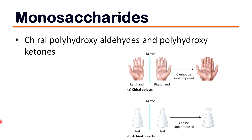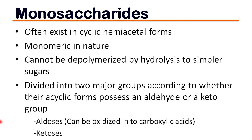This geometric property is called chirality. Monosaccharides exist in cyclic hemiacetal form and are monomeric in nature. They cannot be depolymerized by hydrolysis to simple sugars. They can be divided into two major groups according to whether their cyclic form possesses an aldehyde or keto group.